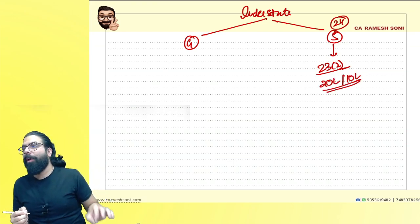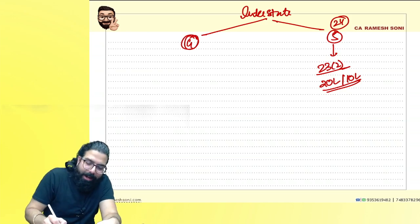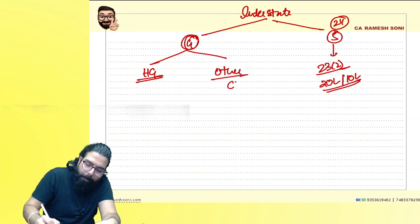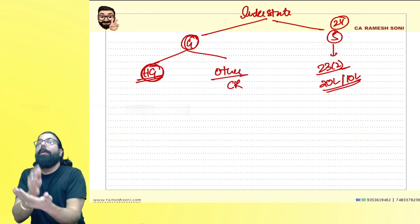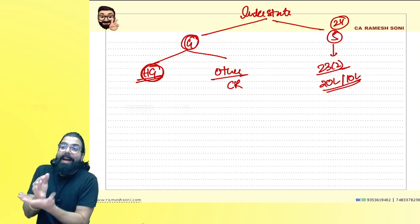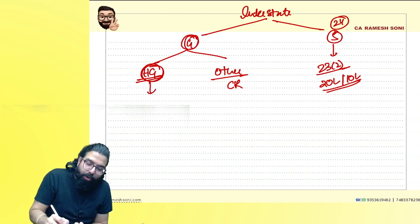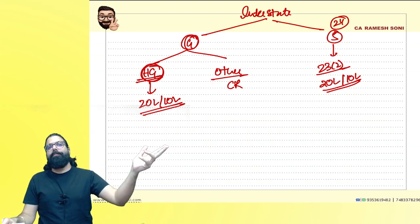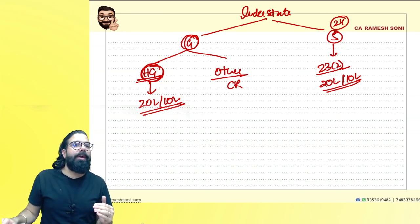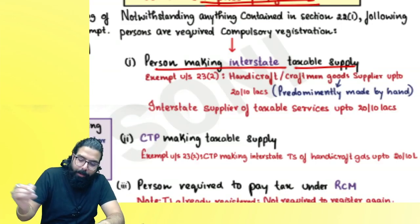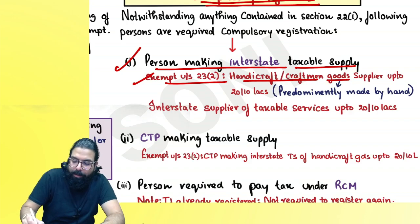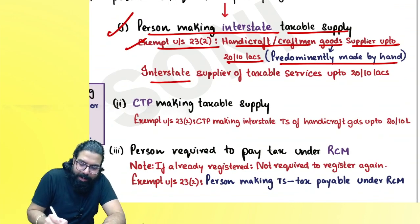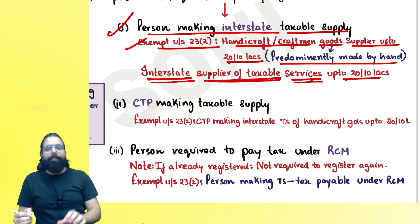For interstate supplier of goods, there are two important questions. If you are a supplier of handicraft goods — goods made predominantly by hand — the government gave an exemption up to ₹20 lakh or ₹10 lakh even for interstate supply. So for handicraft suppliers supplying from one state to another, compulsory registration is not required up to ₹20 lakh or ₹10 lakh. The same exemption applies to interstate suppliers of taxable services — exempted up to ₹20 lakh or ₹10 lakh.